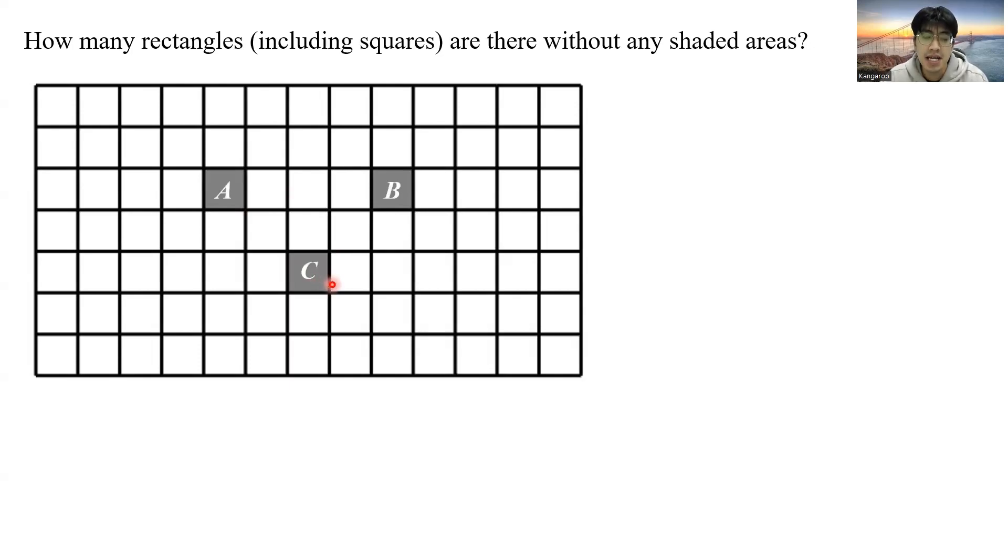We see that it is much more easier to determine which rectangles contain the shaded areas. For example, this rectangle contains the shaded area A, and this rectangle also contains the shaded area A. These two rectangles here consist of two horizontal lines and two vertical lines. Now let me ask you this question. How many horizontal and vertical lines are there for us to choose from such that the rectangles would contain this shaded area A?